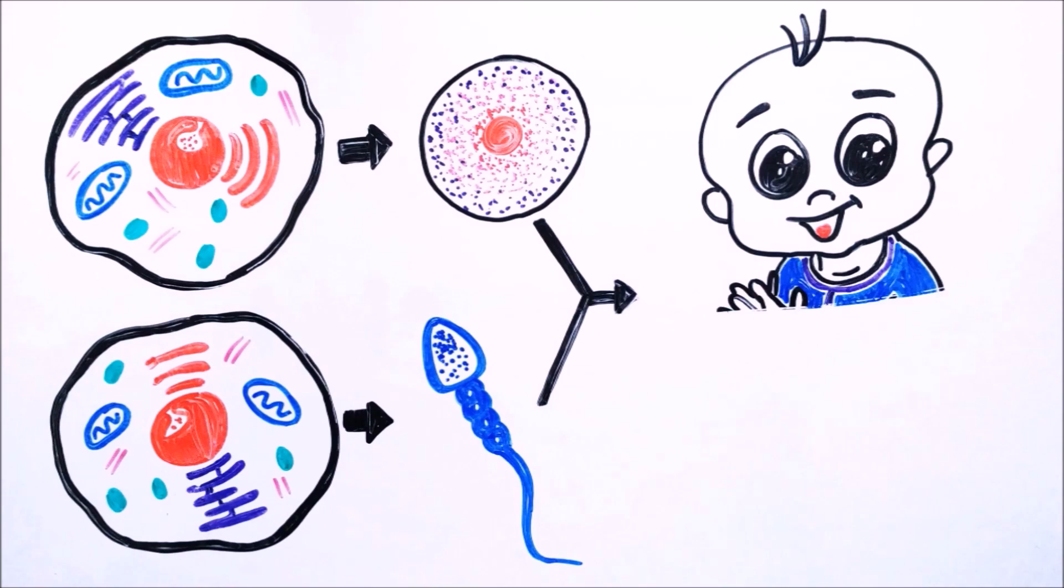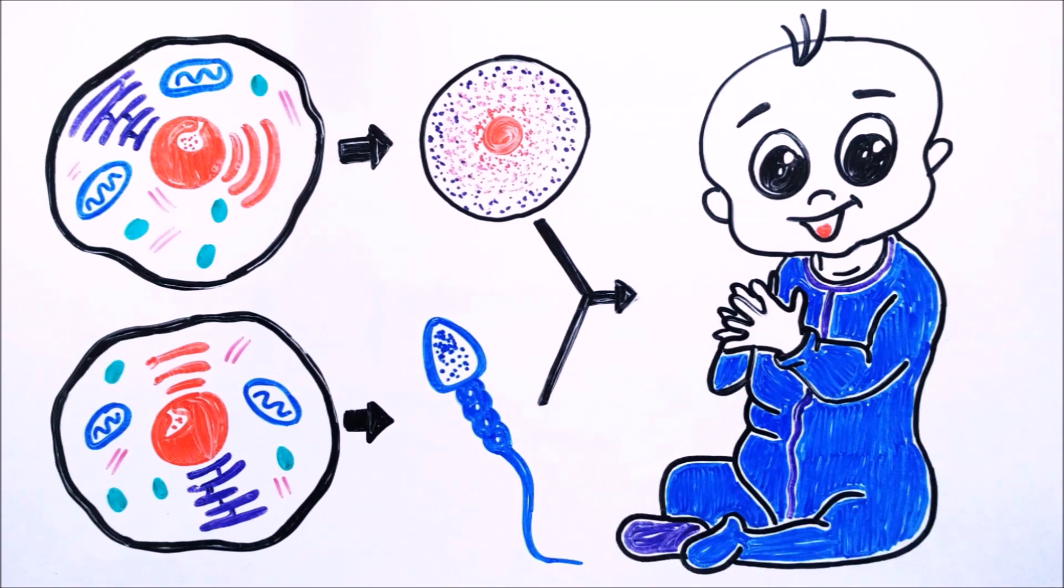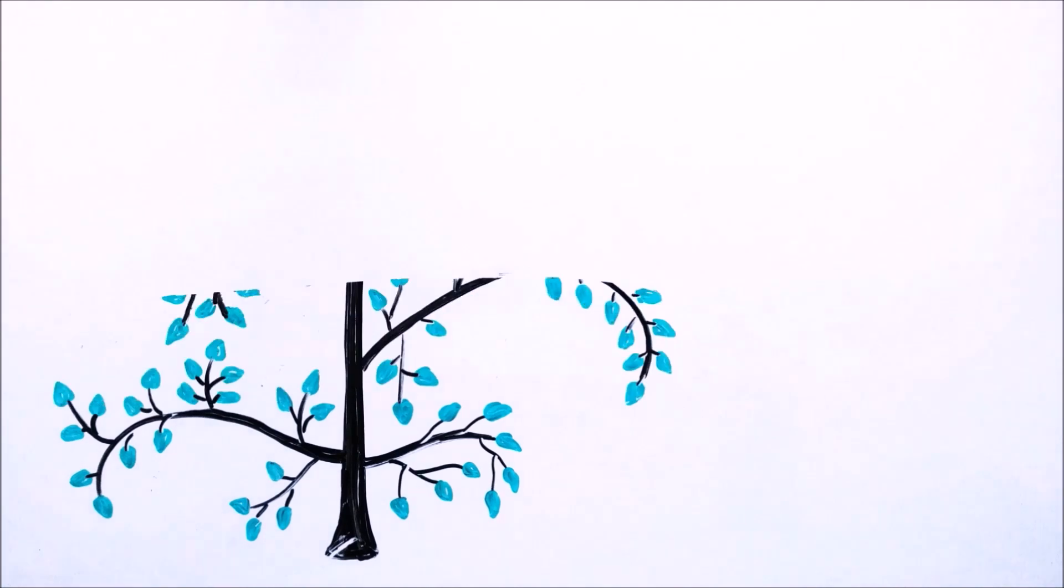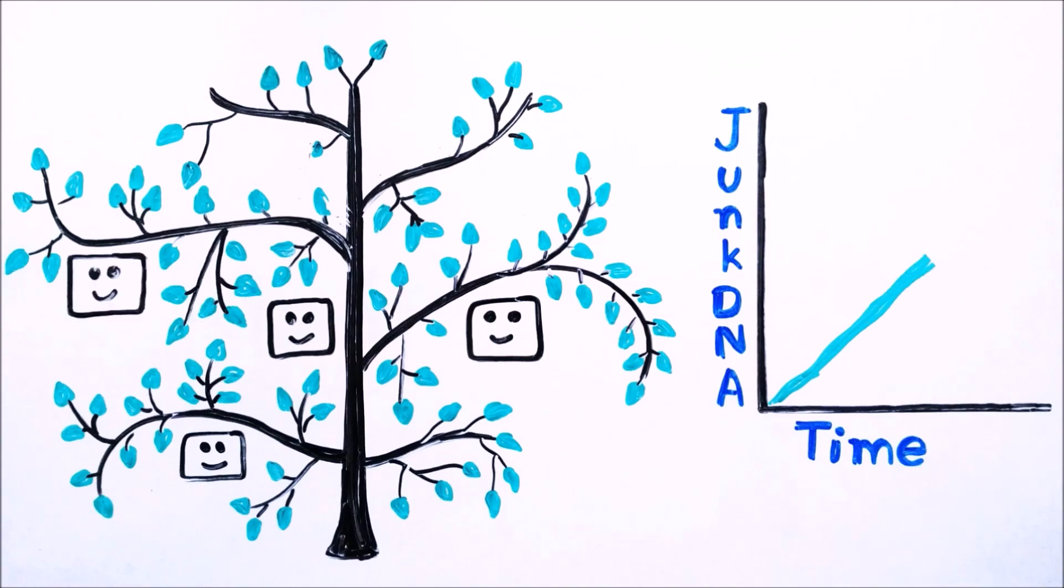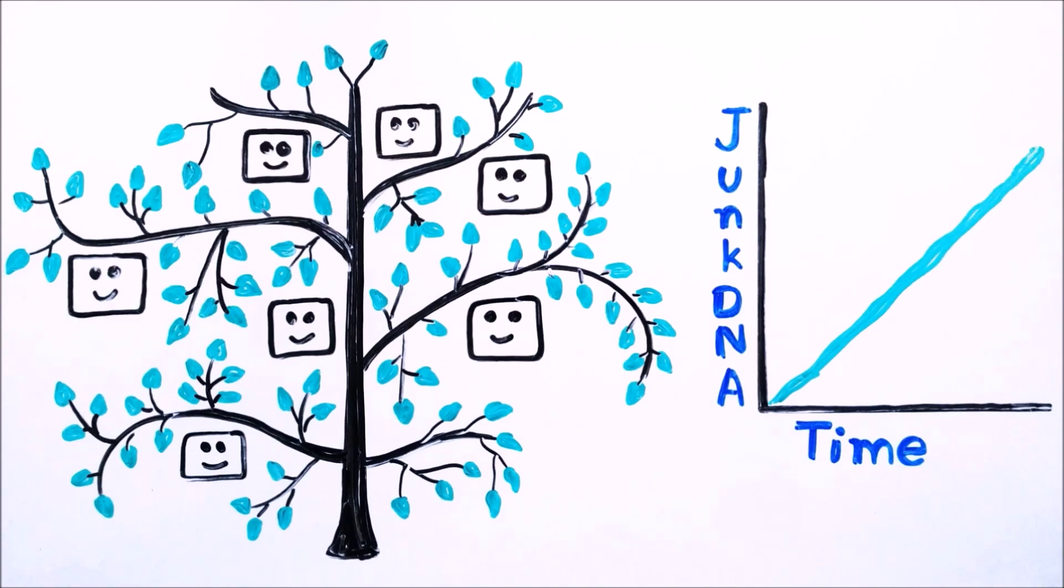This simply means with the passage of time and successive transpositions in offspring, the amount of junk DNA will continue to increase.